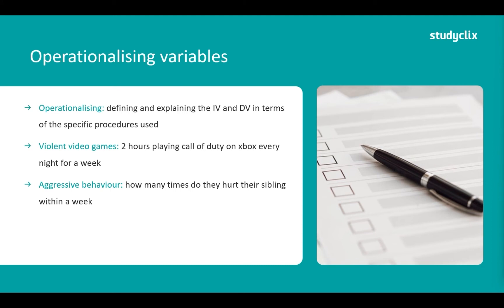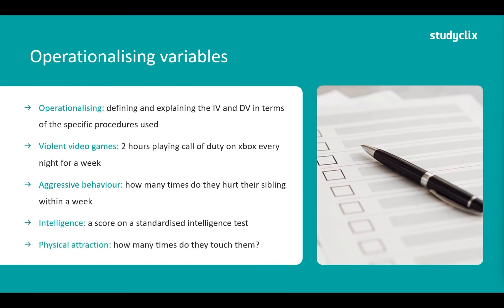Looking at other examples, we can also measure intelligence — operationalized as a score on a standardised intelligence test. If we're measuring physical attraction, we'd measure it by how many times they touch the other person: how many times they hold their hand, touch their shoulder, hug, and all those kinds of things.